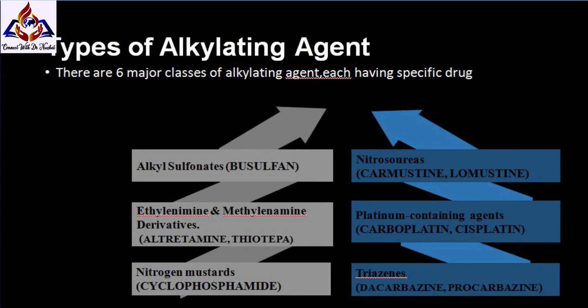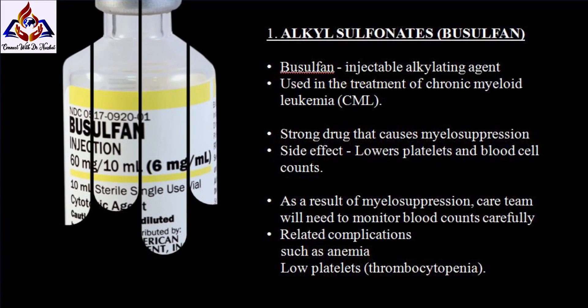The classification of alkylating agents: alkylating agents are divided into six major classes. First, alkyl sulfonates — drug name is busulfan. Second, ethylamine and methylamine derivatives — drugs are altretamine and thiotepa. Third, nitrogen mustards — drug name is cyclophosphamide. Fourth, nitrosoureas — including carmustine and lomustine. Fifth, platinum-containing agents — drug names are carboplatin and cisplatin. Sixth, triazines — drug names are dacarbazine and procarbazine.